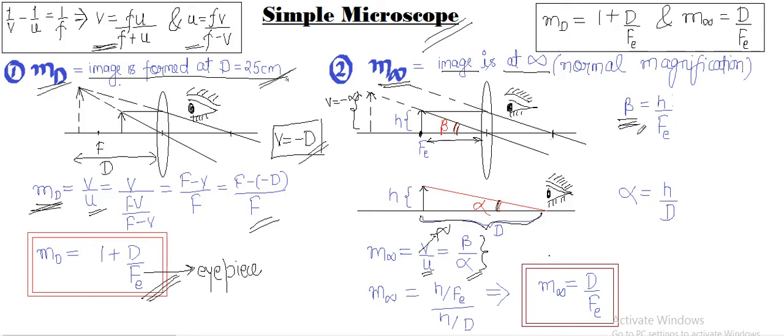Now I have both the alpha and the beta. When I put them here, I get magnification m infinity as d by fe. This is also the formula for eyepiece when the final image is at infinity.